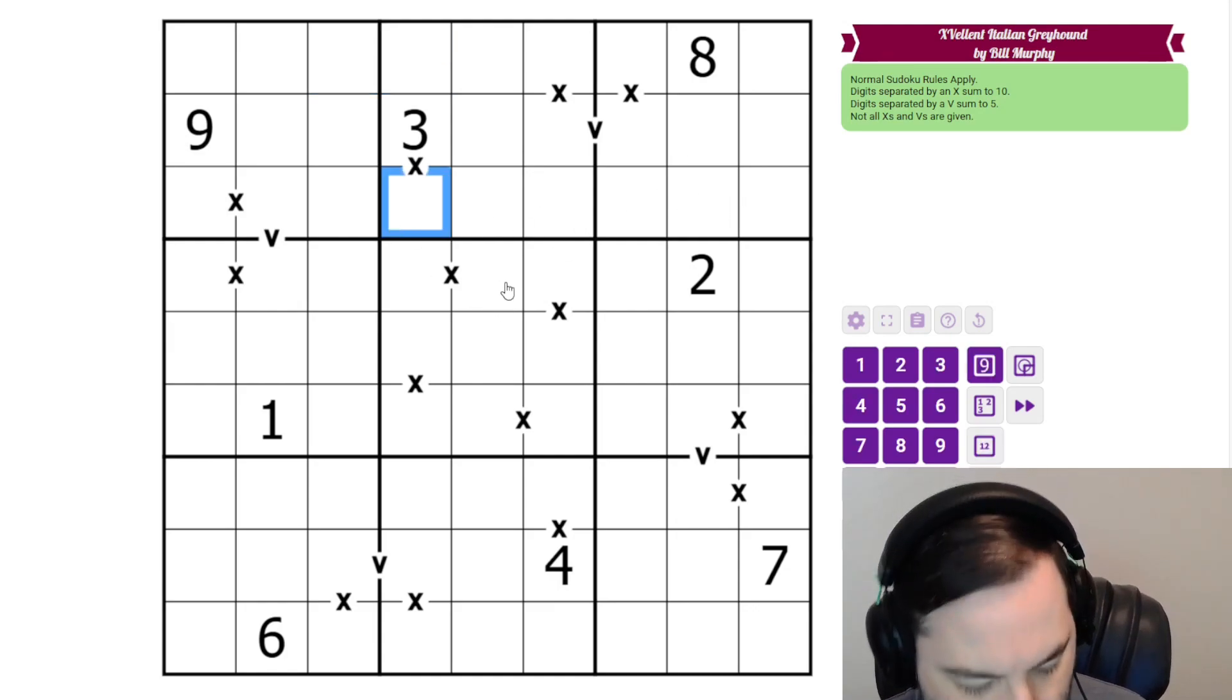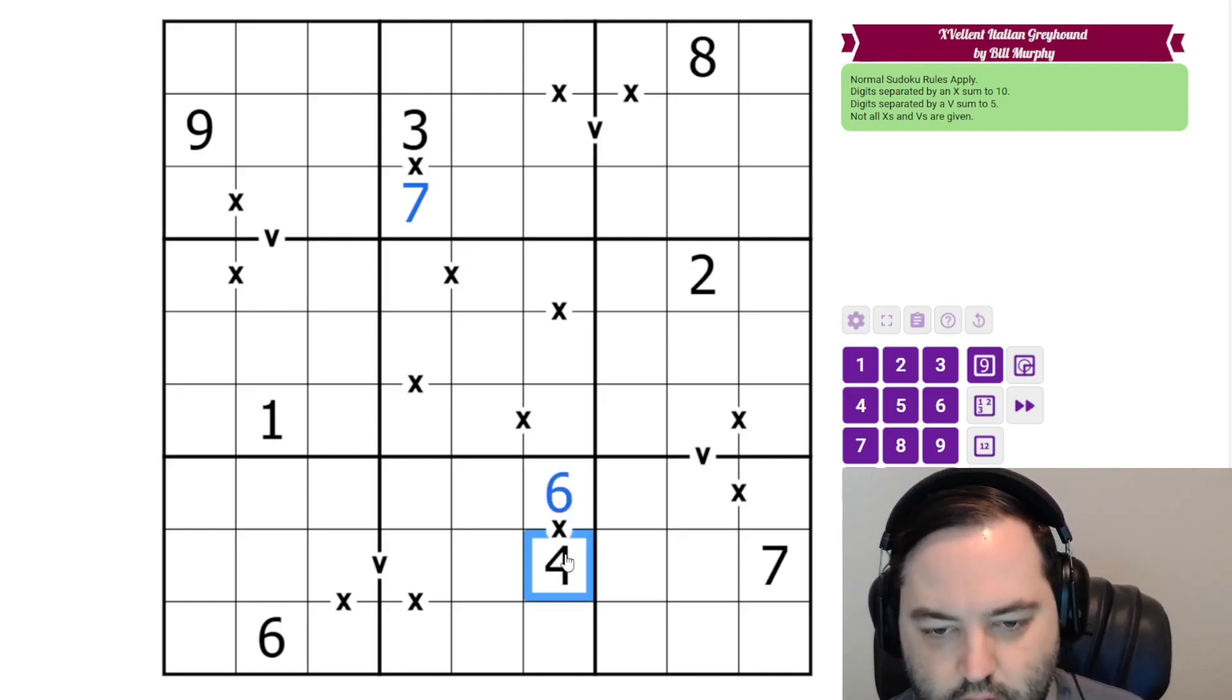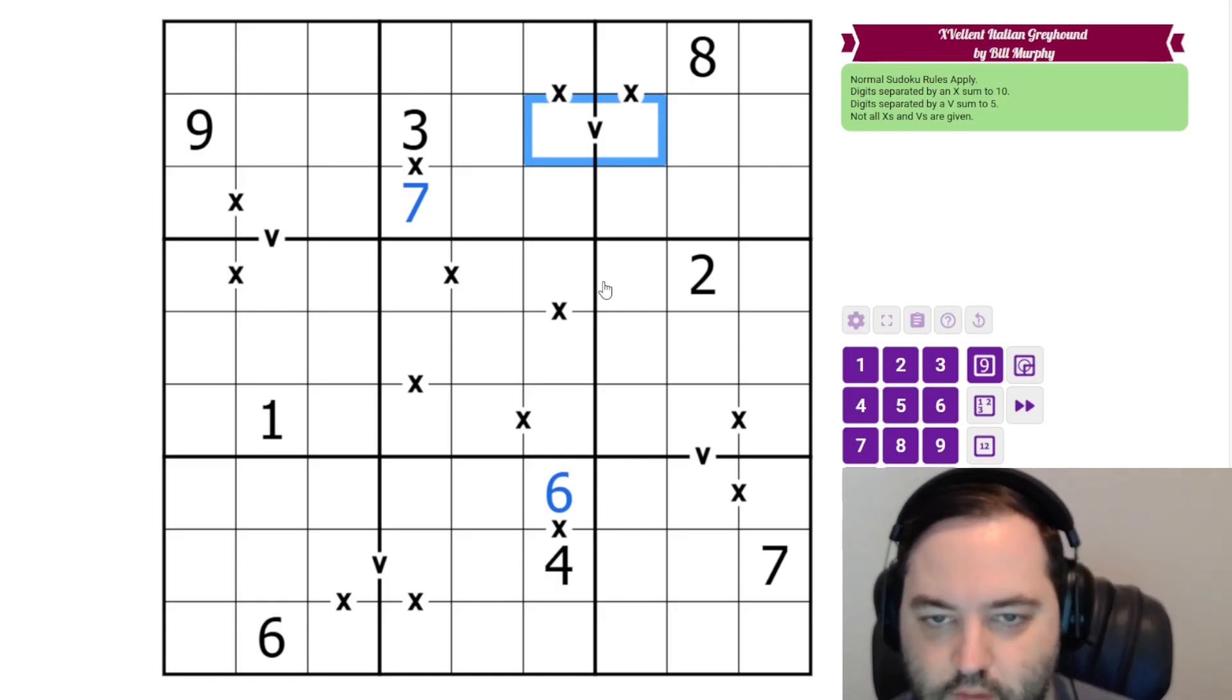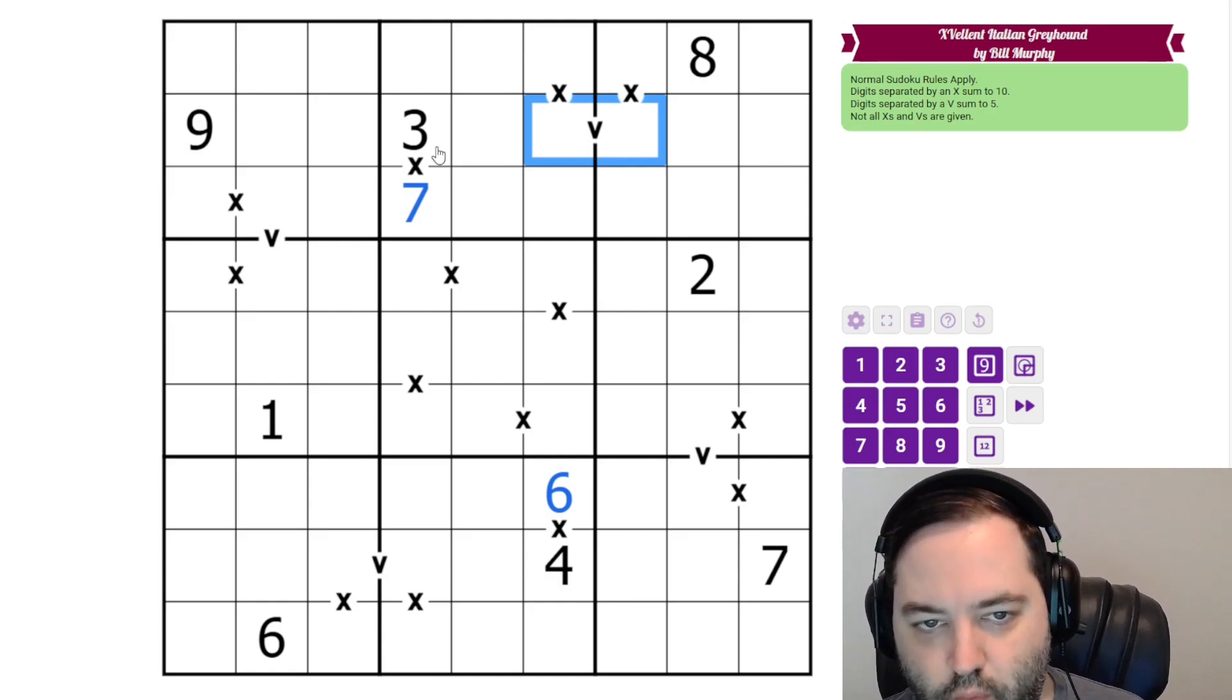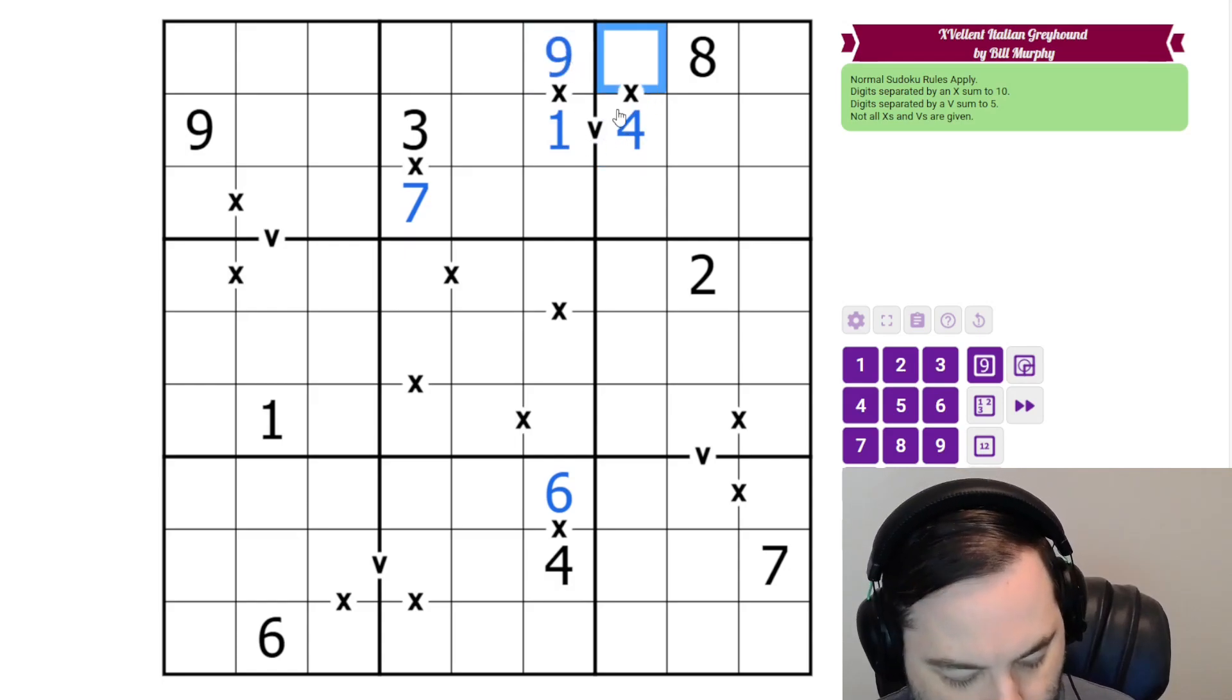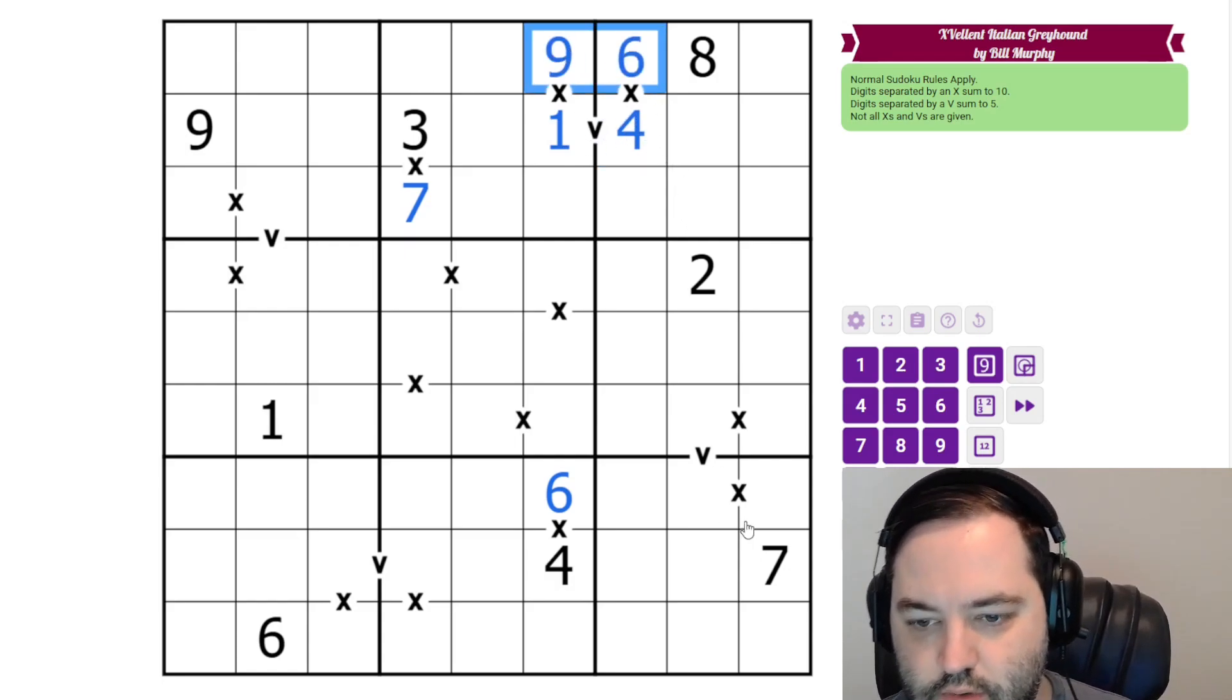And Bill has given us a couple freebies. This is a 7 and this is a 6 to make 10 with the given 3 and 4. And now we're going to look at the V's. The V's are more restricted in X-V pairs because there are only two possibilities to make 5. There are four possibilities to make 10. So the two ways to make 5 in two cells are 1-4 and 2-3. In this case we can't have a 3, so this must be 1-4. And we have a 4 here, so this is 1-4. And because we need to sum to 10, that gives us these two digits up here.